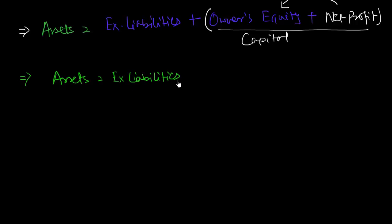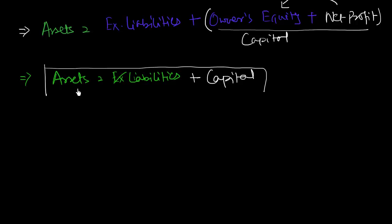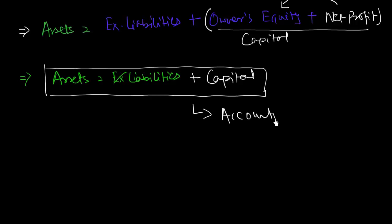So we finally arrive at the equation: Assets = Liabilities + Capital, where by the word liabilities we mean external liabilities. This equation is called the accounting equation, and basically all rules of accountancy are dependent on it.